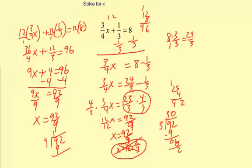9 minus 9 is 0. Bring down the 2. 9 does not go into 2. 0 times 9 is 0. So we're going to have a 2 here. So your answer is actually going to be 10 and 2/9.